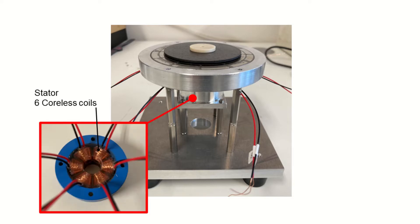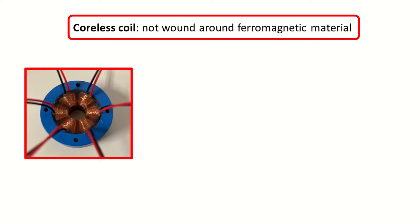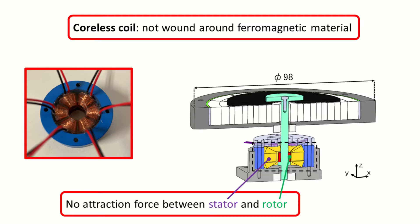There is a stator formed by six coreless coils. These coils are called coreless because they are not wound around a ferromagnetic material such as iron. For this reason, there are no unstable attraction forces between the rotor permanent magnet and any iron parts in the stator.